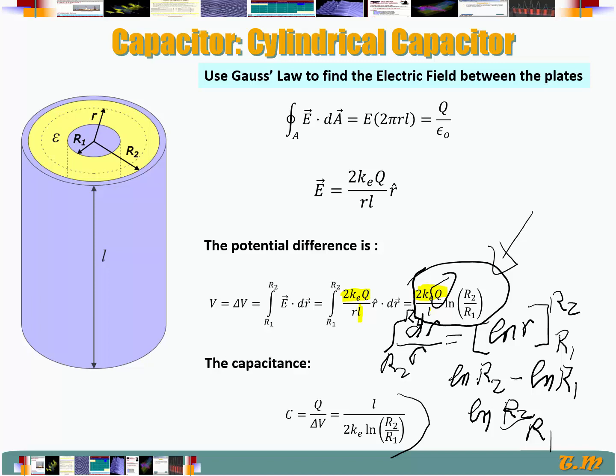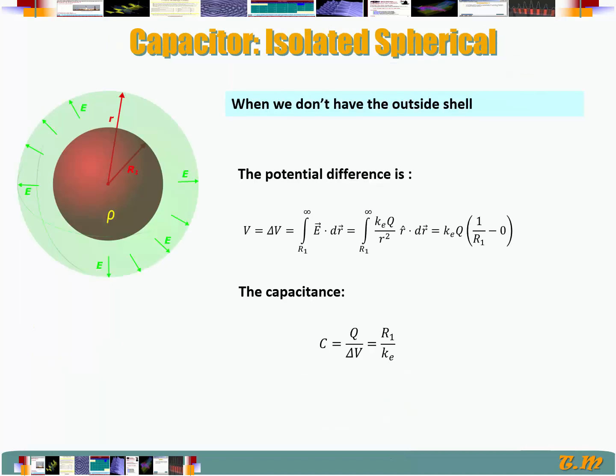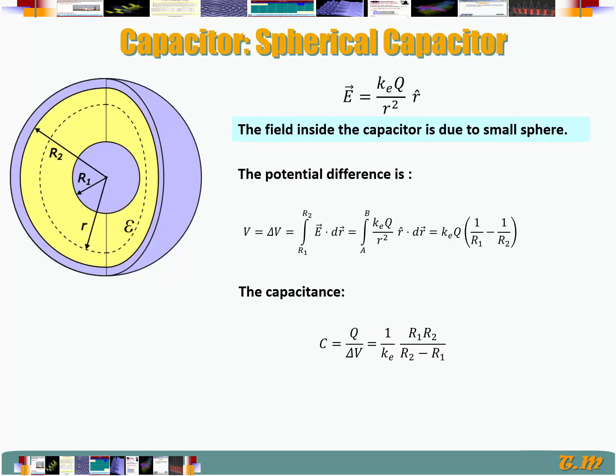So for example here, we have r2 and r1, and L. That's all what we have. If you recall, this is r1 over ke, depends only on r1. For concentric spheres, it depends on r1 and r2. And for parallel plates, it depends on the area of the plates and the separation of the plates.